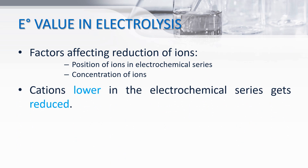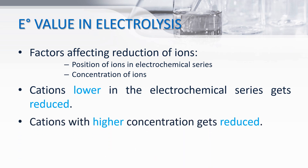Cations lower in the electrochemical series get reduced because the E-naught value of the species lower in the electrochemical series is more positive. As a result, the reduction reaction is favoured more and the ions get reduced. Cations with a higher concentration also get reduced because as the concentration increases, the E-naught value becomes more positive so the reduction reaction is favoured.